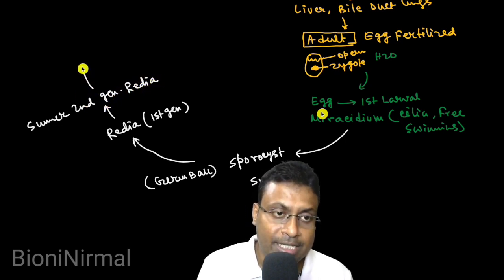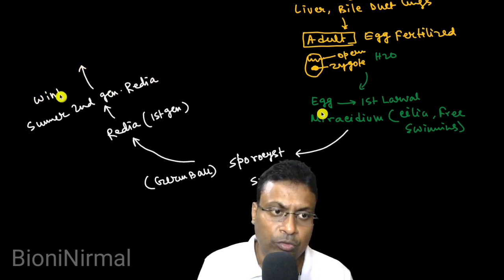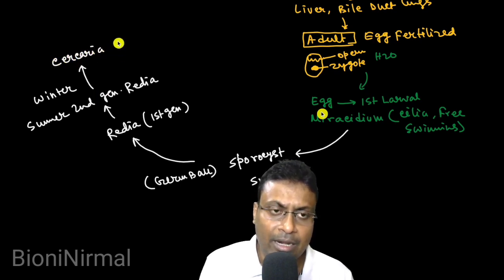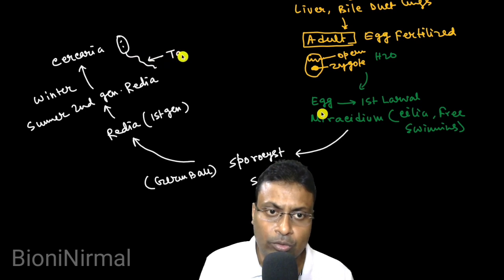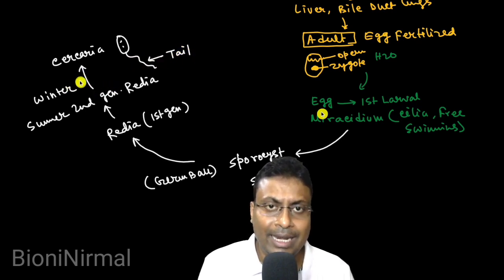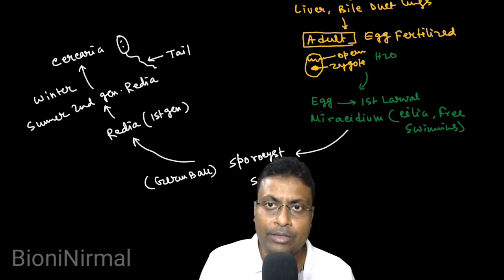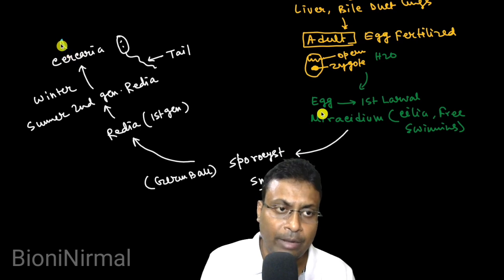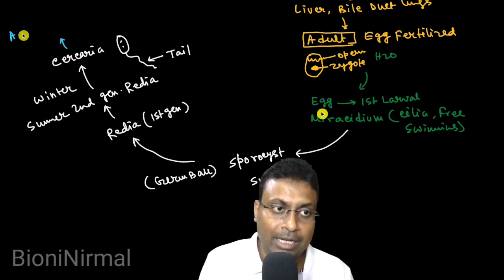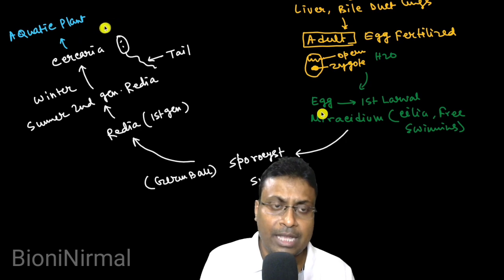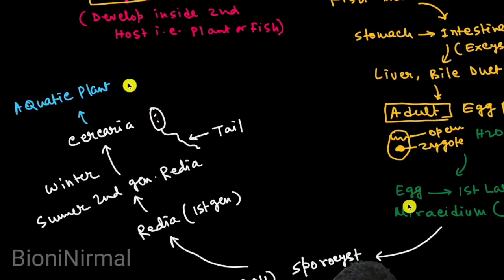In the winter season, the various larval stages are different. The cercaria larva is aquatic and lives with the water and aquatic plants. Cercaria larvae are rounded, and they attach to aquatic plants.